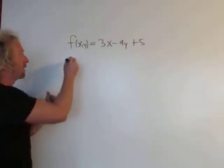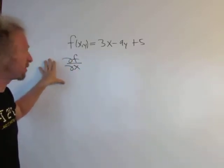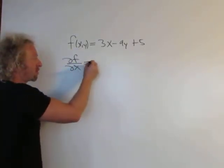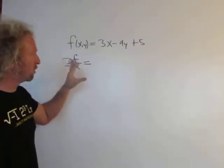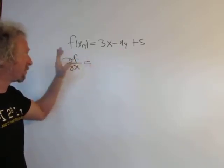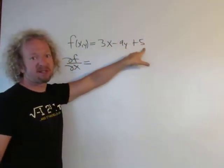So ∂f/∂x, that's the notation we use for the first partial derivative with respect to x. When you're taking the partial derivative with respect to x, you want to treat all your y's as constants. Basically you're taking the derivative with respect to x and you're fixing y. So this is a constant and this is a constant.